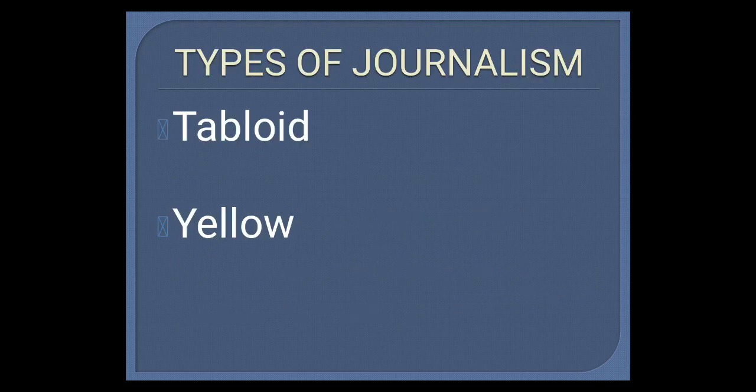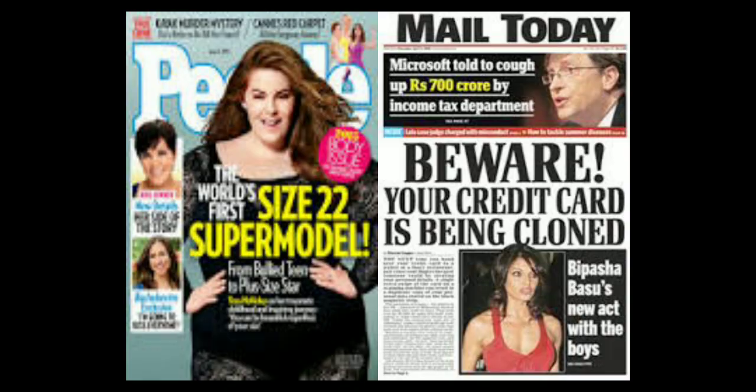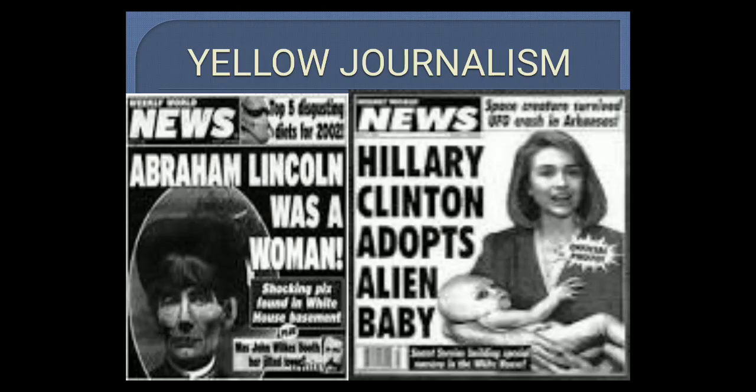There are two types of journalism — one is tabloid and the other is broadsheet. This is an example of a tabloid, and this is an example of a broadsheet.